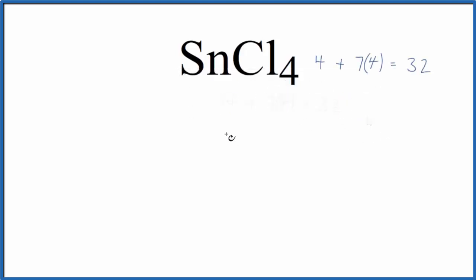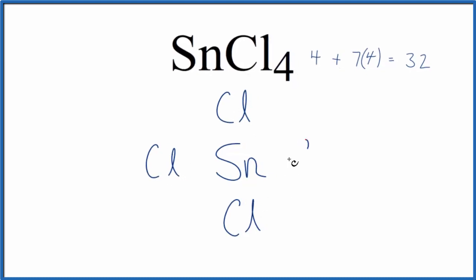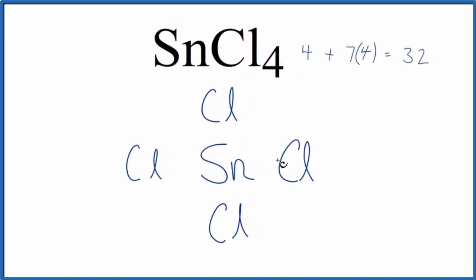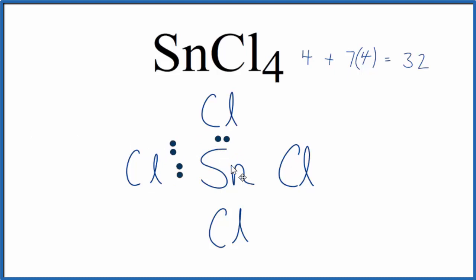We'll put the Sn — that's the tin — in the center of the structure, since it's the least electronegative. Then we'll put the chlorine atoms around the outside. We have our 4 chlorine atoms. Then we'll put electrons between the atoms, which forms the chemical bonds between the tin and the chlorine atoms. At this point we've used up 8 valence electrons.